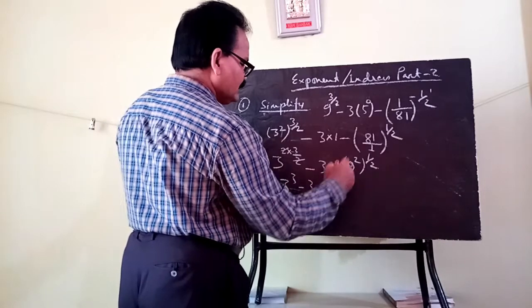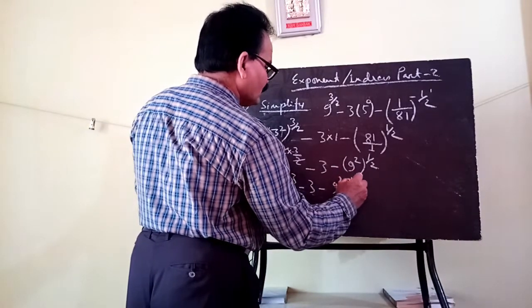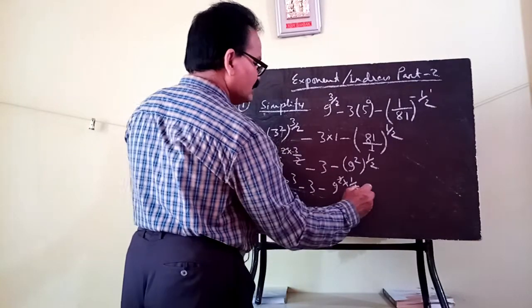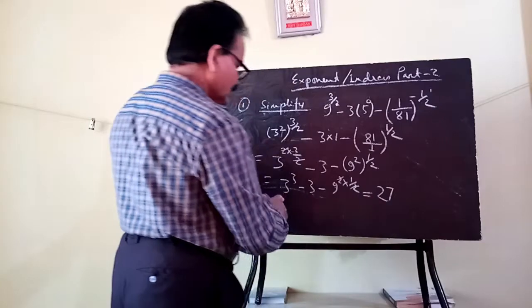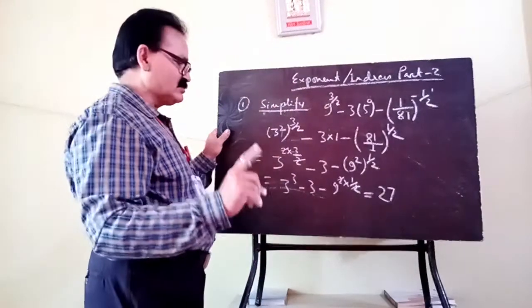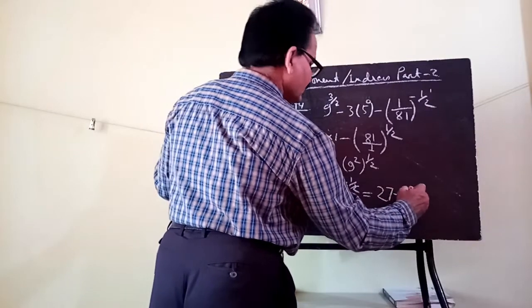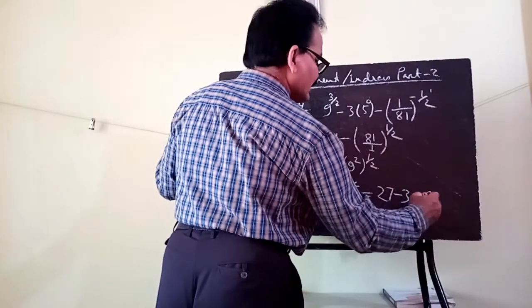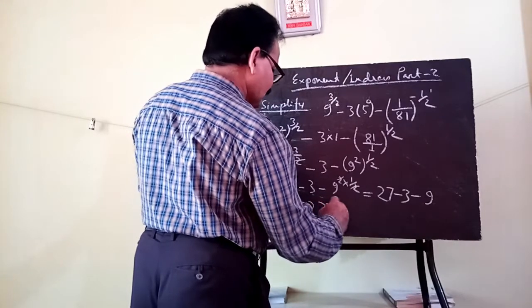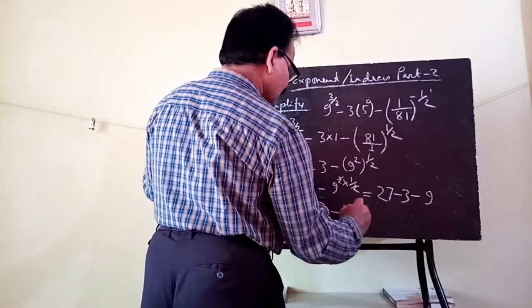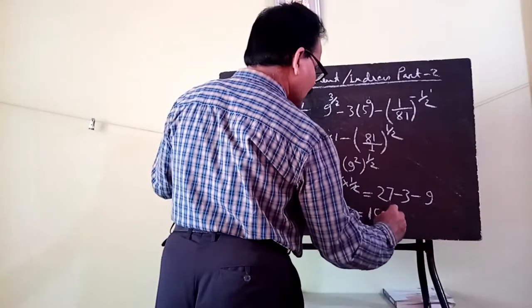So we have 3 to the power 3, minus 3, minus 9. That is: 3 to the power 3 means 3 into 3 into 3, which is 27, then minus 3, then minus 9. So the result is 27 minus 3 minus 9, which equals 15. That will be the answer.